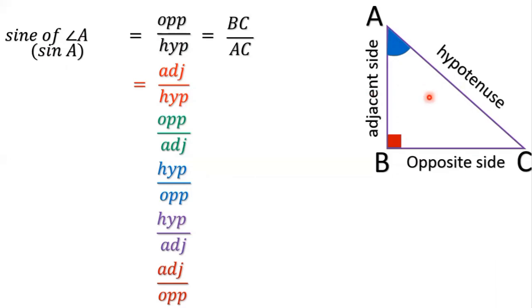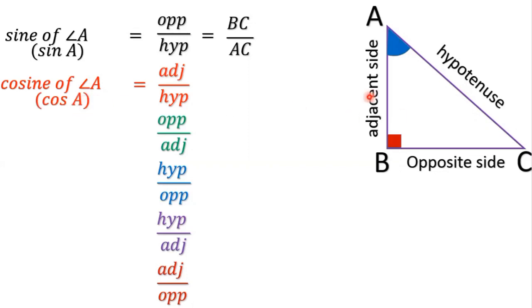The ratio adjacent by hypotenuse is given the name cosine of angle A, abbreviated as cos A. In the figure, the adjacent side is AB and the hypotenuse is AC. So adjacent by hypotenuse is equal to AB by AC.